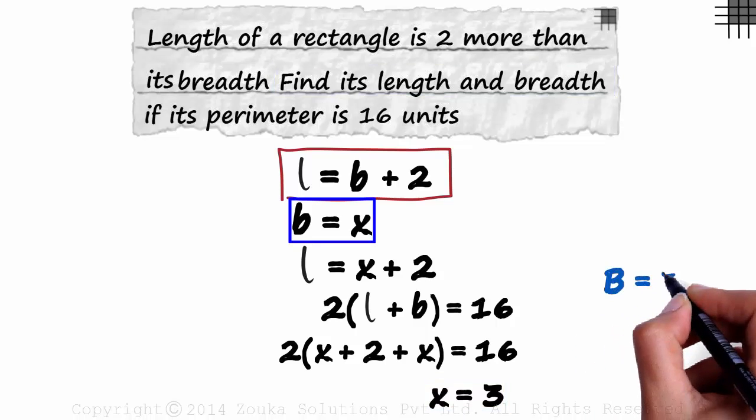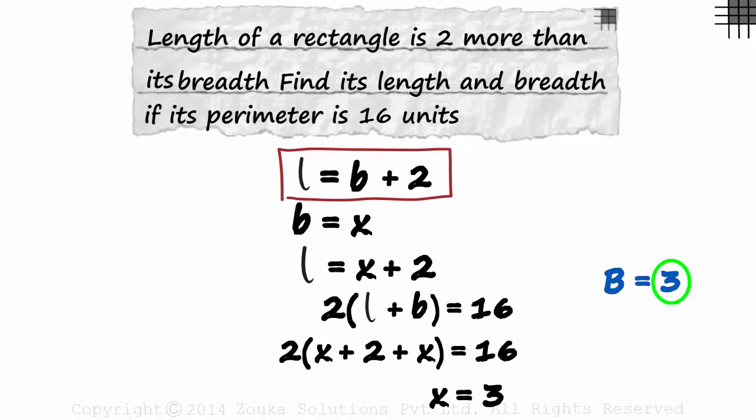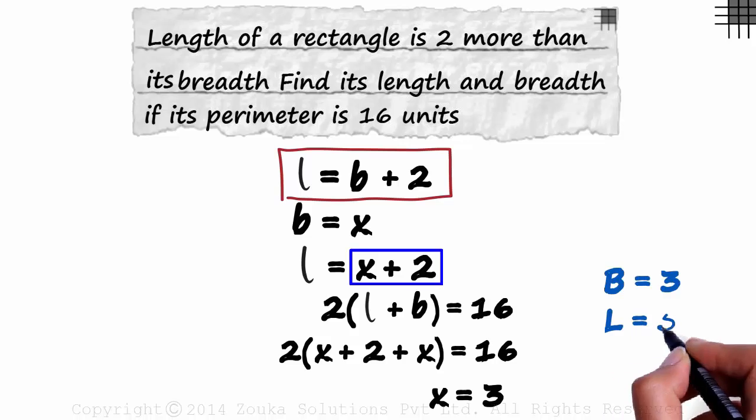As B is X, it will measure 3 units. And as the length is two more than its breadth, it will measure 5 units.